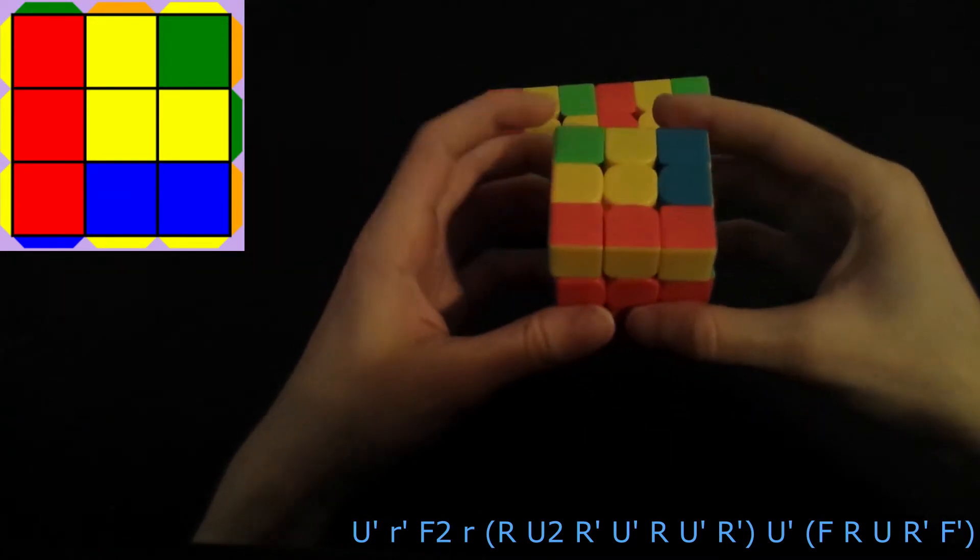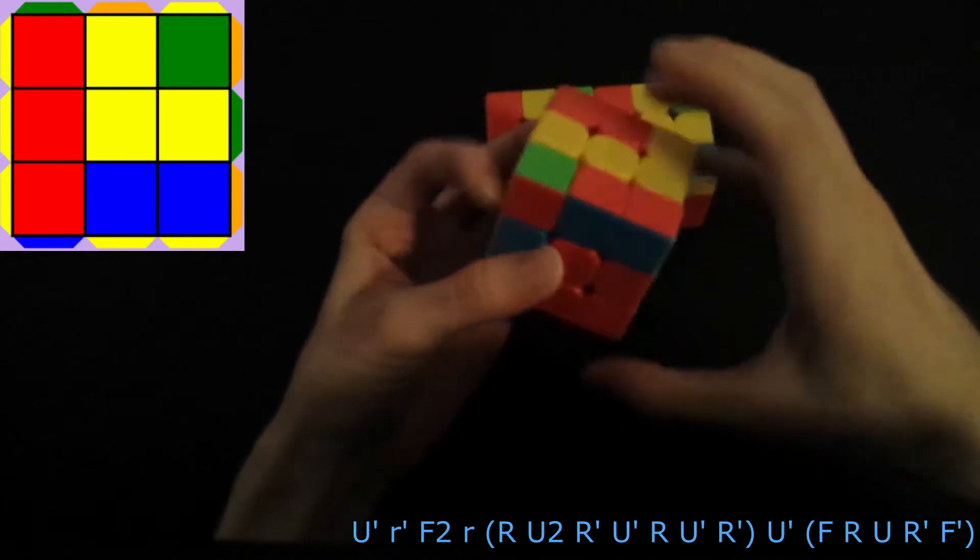Once again, take out the left pair like this, anti-sune, and then insert.